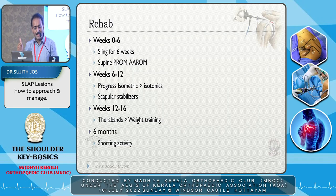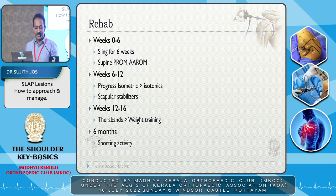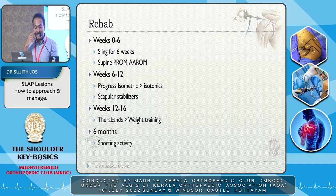Rehabilitation after SLAP repair: use a sling for comfort for about 3 weeks, then the patient can use the hand but no loading of the biceps, no pulling movements, and no 100% elbow extension — keep the elbow between 20 to 90 degrees and avoid active elbow flexion. Progress from isometrics to isotonics. Scapular stabilizers are addressed from 6 to 12 weeks. Theraband and weight training begin after 3 months. Return to sport is usually allowed from 6 to 9 months.